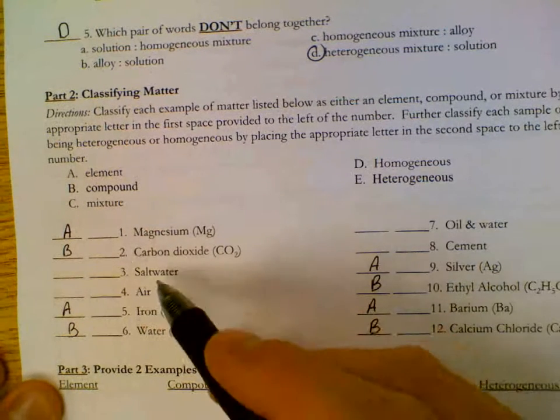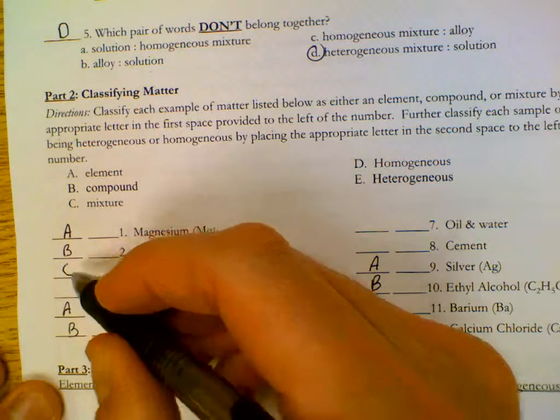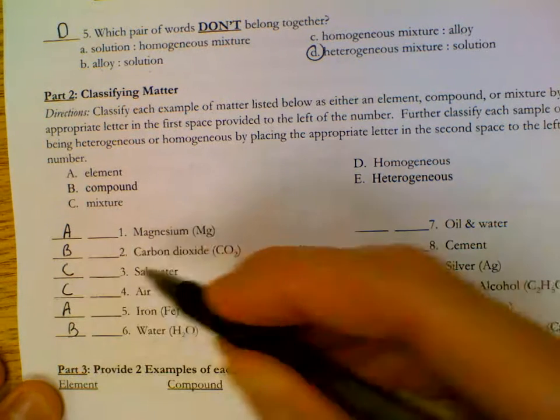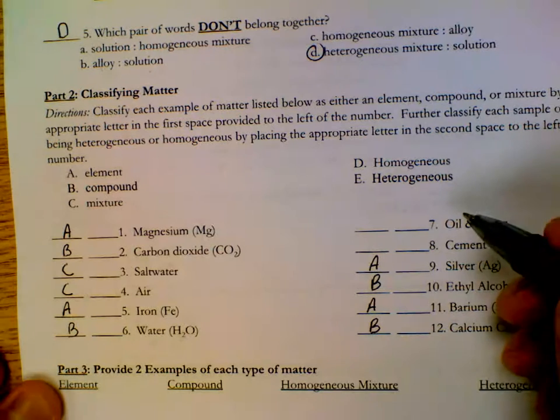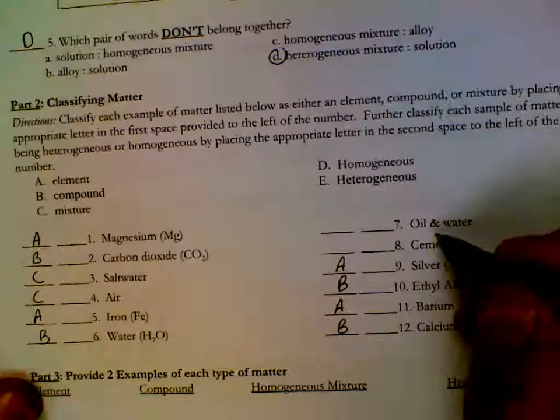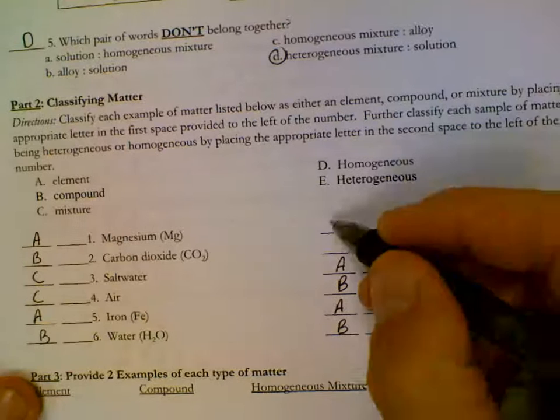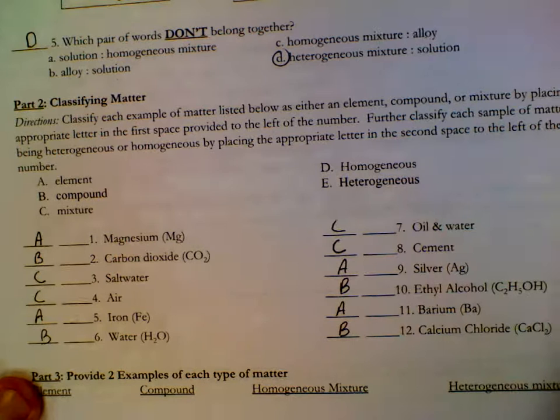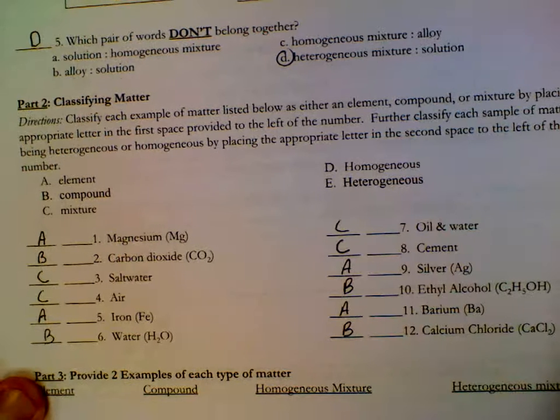Salt and water, there's two different substances there, so that's a mixture. Air, as we said earlier, has a bunch of gases. This is CO2, O2, N2. Oil and water - we have oil, and we have water. So, mixture. Cement has a bunch of different chemicals inside of it.